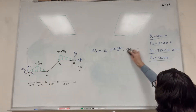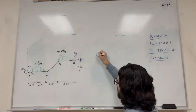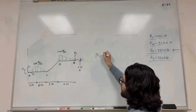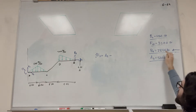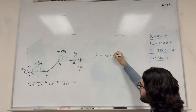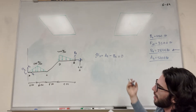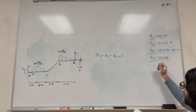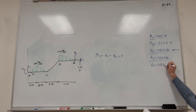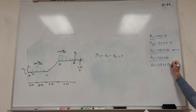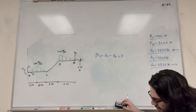Sum of forces in the X direction — this one is much easier. We have A of X minus B of X equals zero. Since B of X is pointing to the left, we subtract it. At equilibrium it equals zero, so A of X equals B of X, which is 2,800 pounds, and we know that one's pushing to the right.